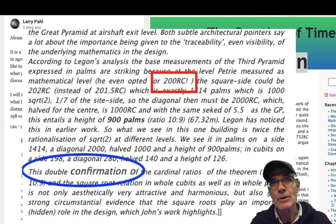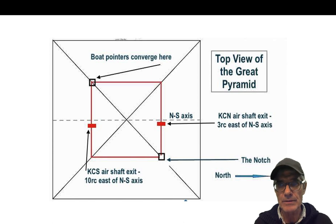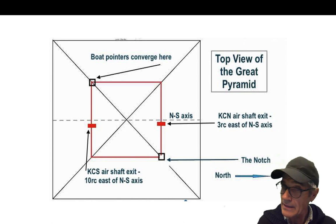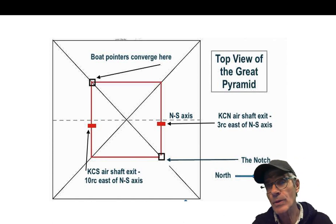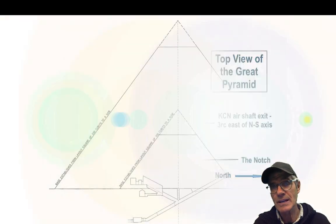Here's the Hemiunu template from the top view. You can see that the two air shafts, the King's Chamber South and the King's Chamber North, where they go through - not in the exact middle of the pyramid - you can see where the notch is. That's part of the Hemiunu template, and the boss pointers from the east side converge in the southwest. That's the definition of the Hemiunu template, that slice, the horizontal slice of the Great Pyramid.